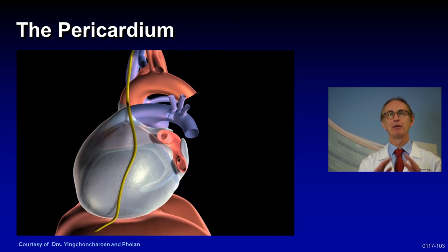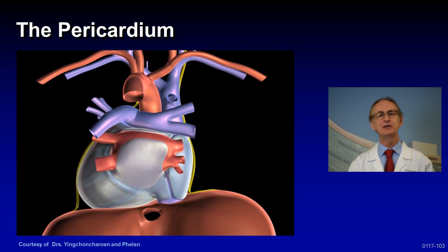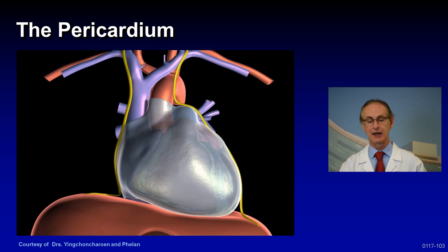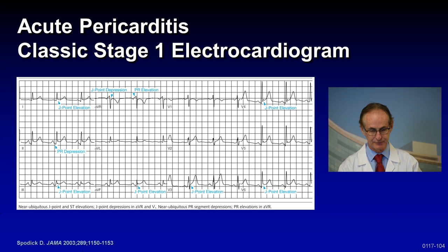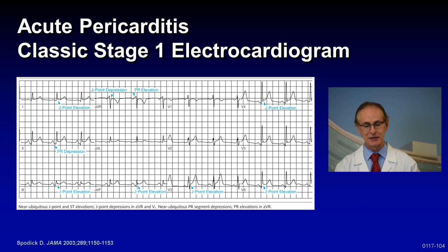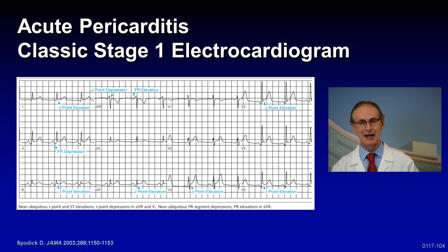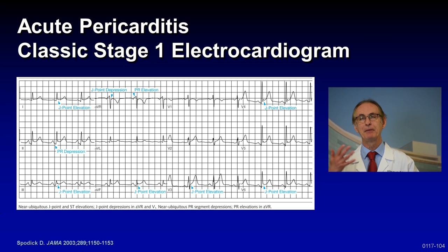Here's an example of the pericardium that envelops the heart. Normally it has physiologic function, but sometimes you can get inflammation of the pericardial sac causing pericarditis. Classically, clinicians have used the EKG to assess pericarditis — this slide shows the classic J-point ST diffuse elevation, as well as PR depression, and people have used this for years.